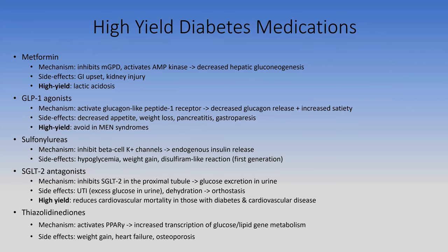Thiazolidinediones (glitazones) activate PPAR-gamma—don't confuse with PPAR-alpha activated by fibrates. They increase gene transcription. Side effects include weight gain like sulfonylureas, but the high-yield findings are heart failure and osteoporosis, which can be caused or worsened. Avoid in patients with heart failure. In summary, GLP-1 agonists or SGLT2 inhibitors are now preferred second choices after metformin; sulfonylureas are generally avoided. Use contraindications and indications to guide your choice.